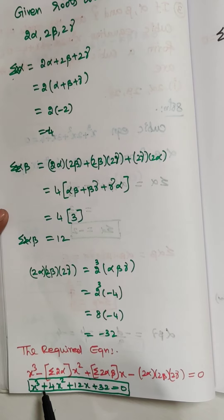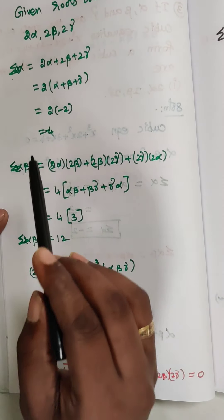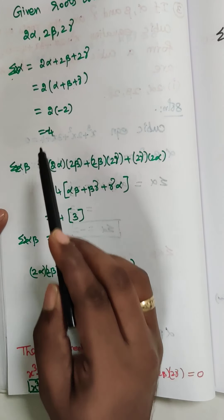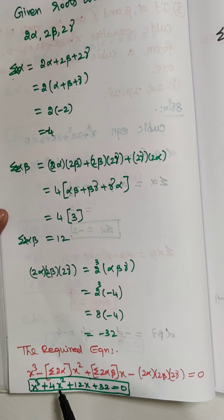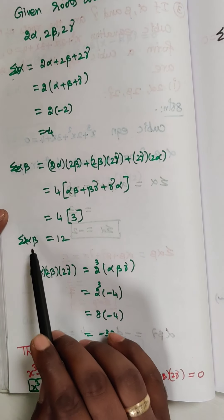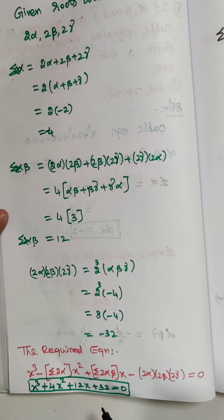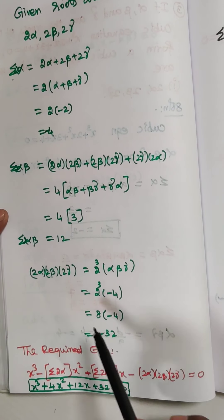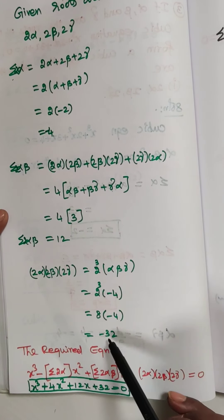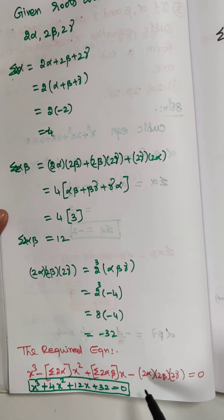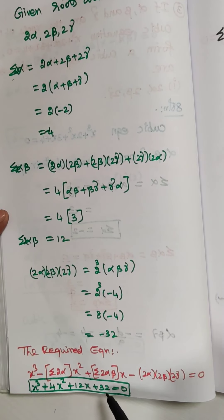Substituting: x³ − (−4)x² + 12x − (−32) = 0, which simplifies to x³ + 4x² + 12x + 32 = 0. This is the required cubic equation.